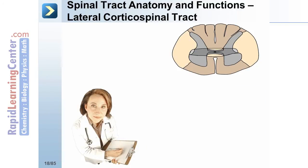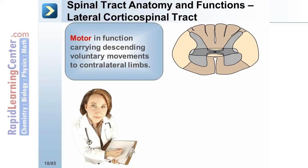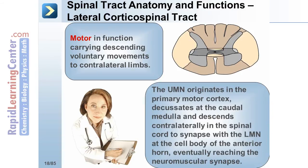The third spinal tract is the lateral corticospinal tract. It is motor in function, carrying descending voluntary movements to contralateral limbs. The upper motor neuron originates in the primary motor cortex, decussates at the caudal medulla, and descends contralaterally in the spinal cord to synapse with the lower motor neuron at the cell body of the anterior horn, eventually reaching the neuromuscular synapse.